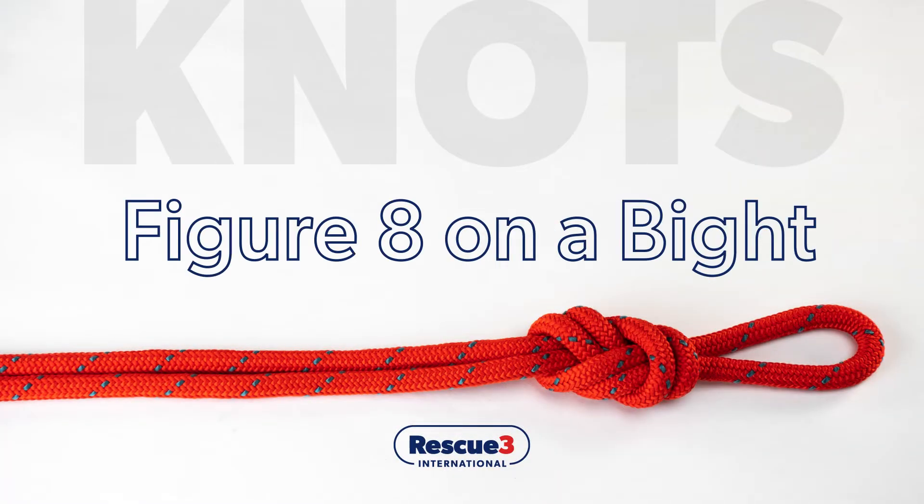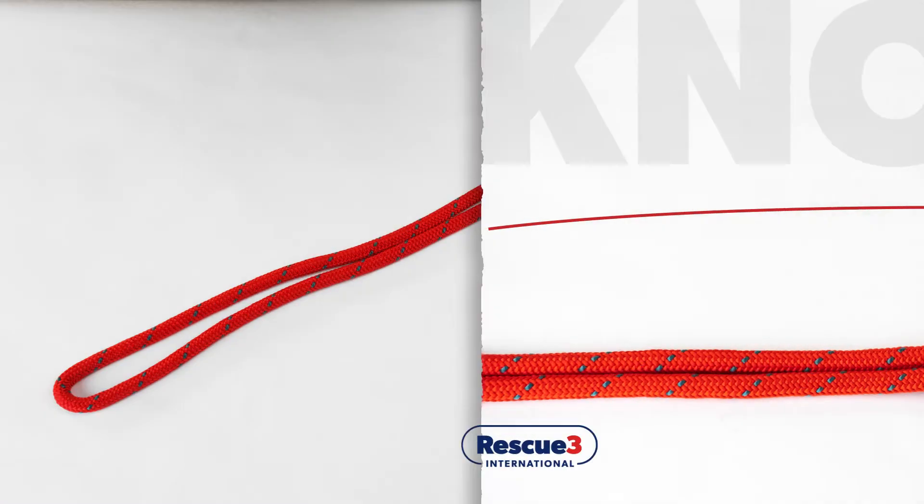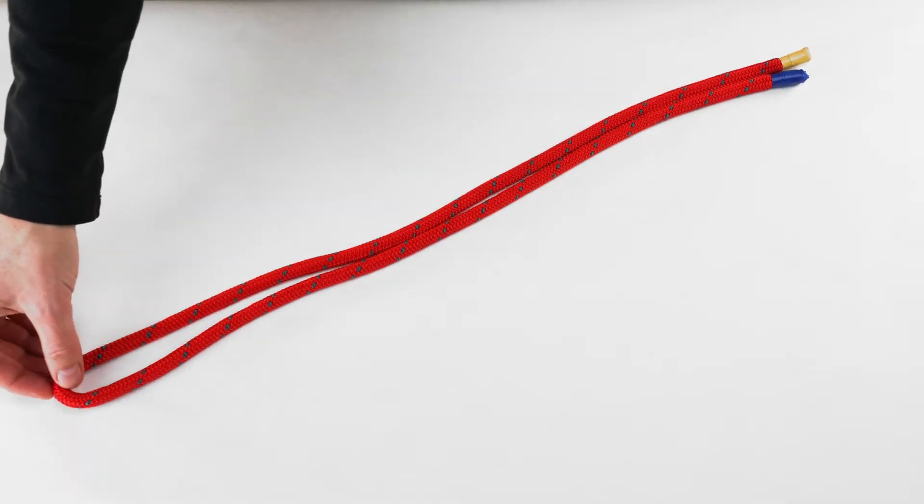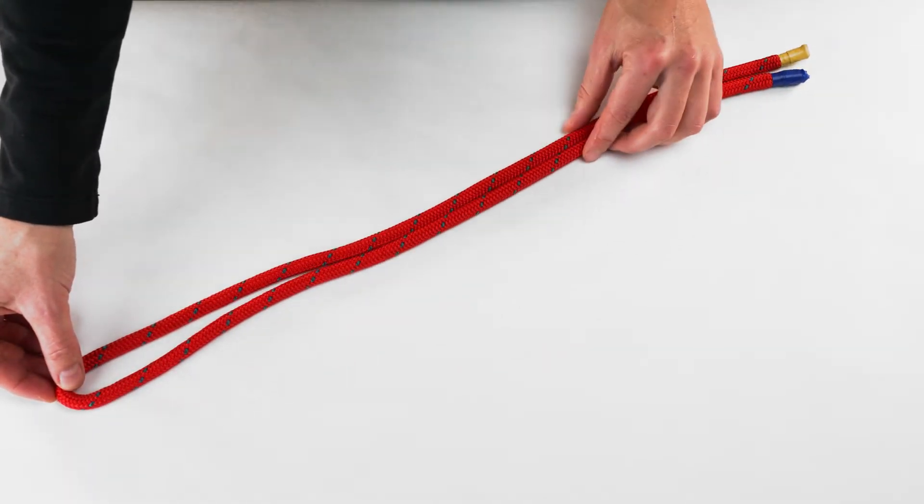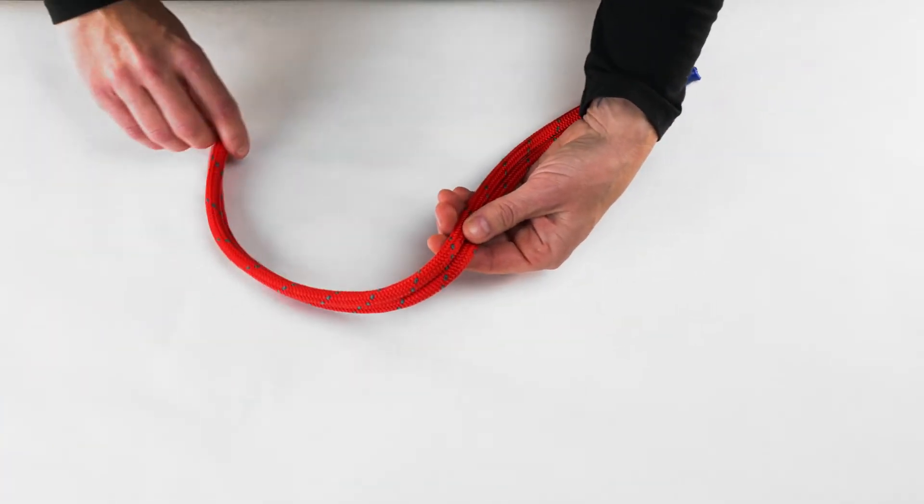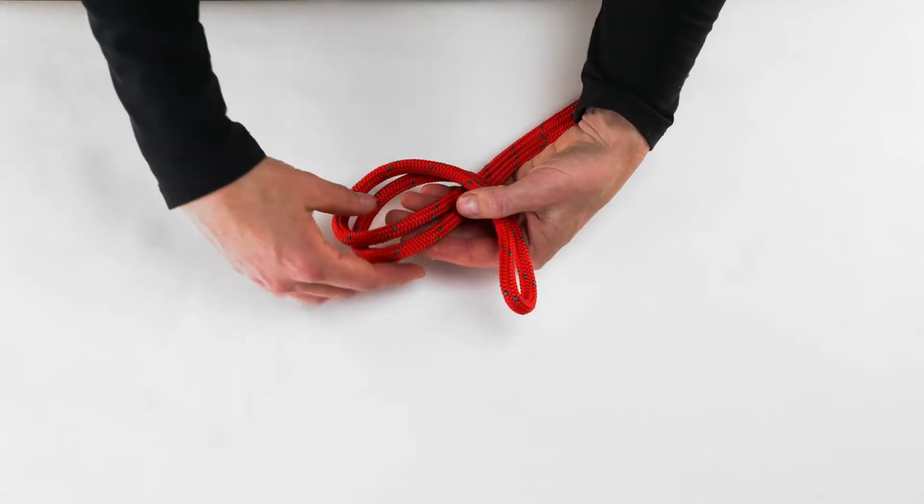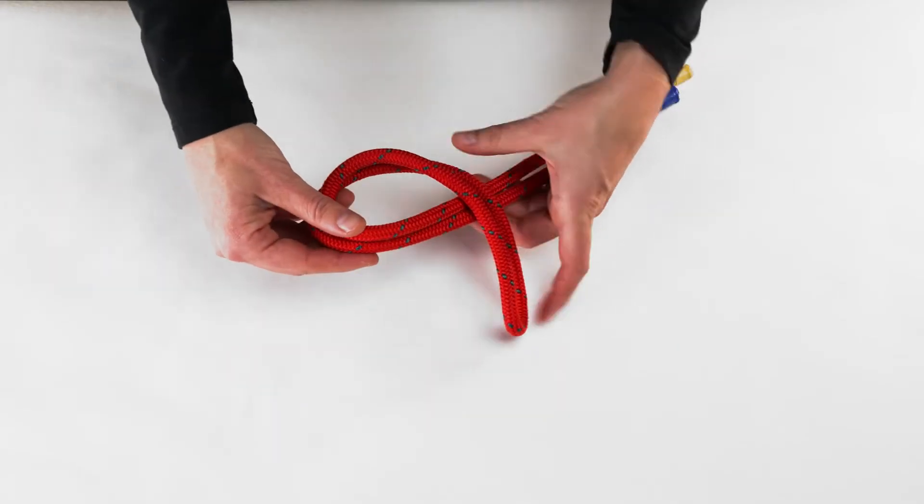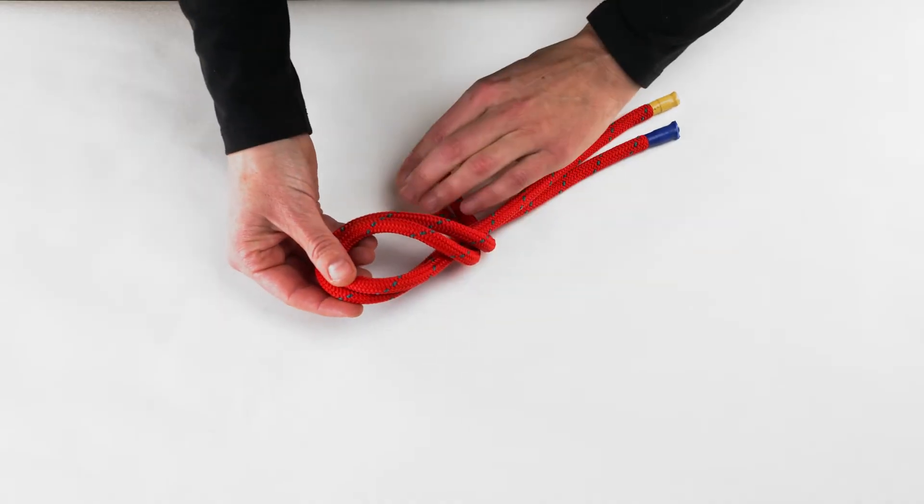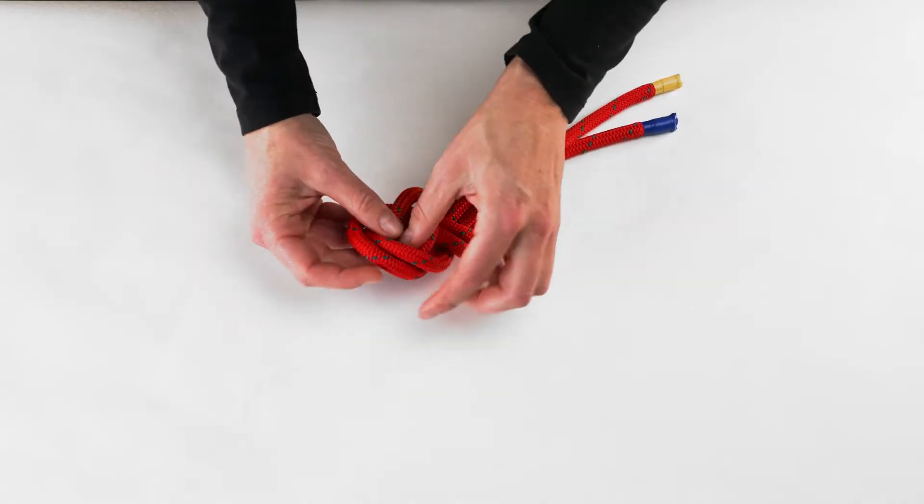Figure eight on a bite. To tie a figure eight on a bite, form a bite in the section of the rope where you want your knot. Cross that bite over the standing strands to form a loop. Bring the bite under the rope, back over, and through the loop.